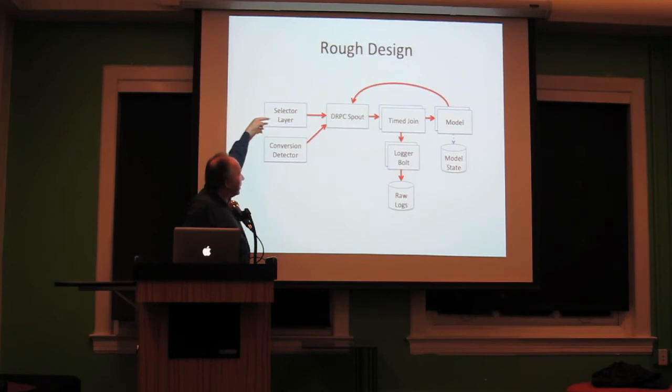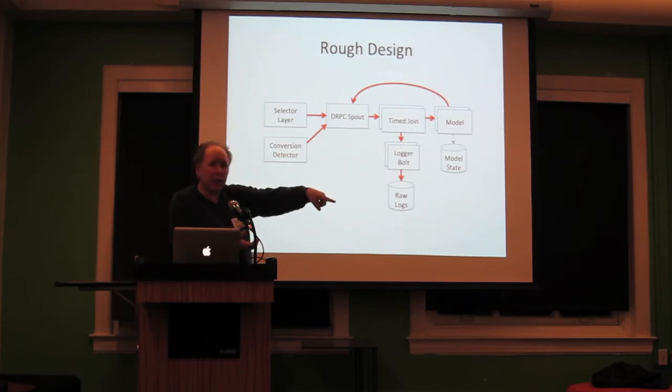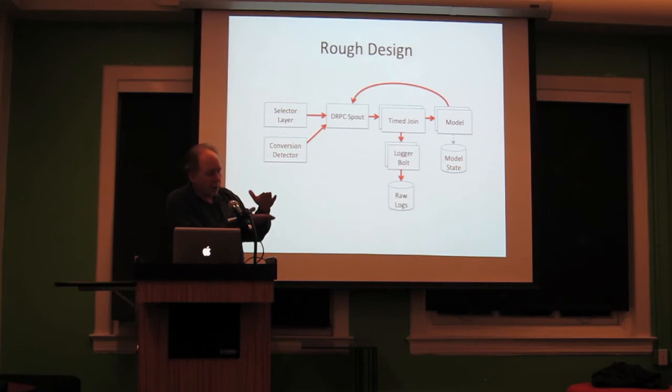Rough design: we have a selector layer, some sort of ad service layer connected to a web thing, coming into a DRPC spout. We have a timed join there. It's going to buffer impressions and immediately pass those on to the model for a selection return result. It's also then going to buffer them so that conversions coming in can be matched up to the impressions. Then we can send training data at the end of an aging period. We have to wait a constant amount for all impressions to see if they convert because we can't wait a short time for some and a long time for others without introducing bias. We wait a certain amount of time. If conversions have come in, then we pass a positive training result in. If they have not, we pass a negative training result into the model.